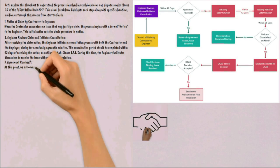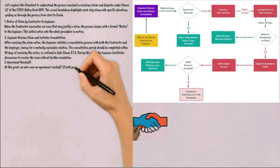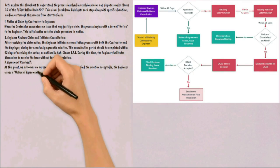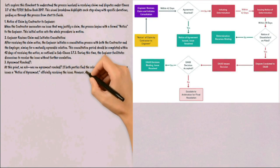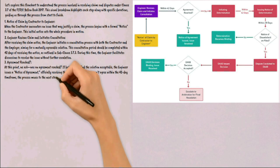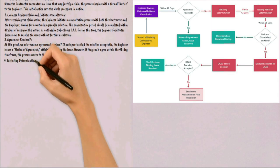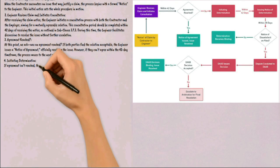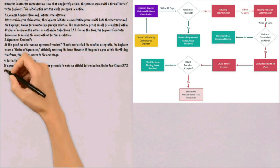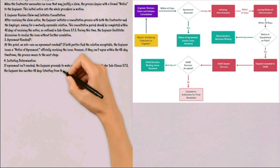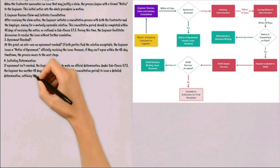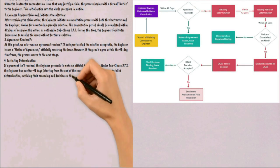Step 3: Was an agreement reached? If both parties find the solution acceptable, the engineer issues a notice of agreement, officially resolving the issue. However, if they can't agree within the 42-day timeframe, the process moves to the next stage. Step 4: Initiating Determination — if agreement isn't reached, the engineer proceeds to make an official determination. Under Sub-clause 3.7.2, the engineer has another 42 days, starting from the end of the consultation period, to issue a detailed determination outlining their reasoning and decision on the claim.